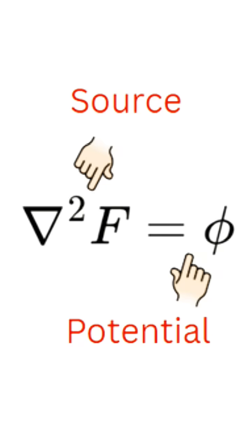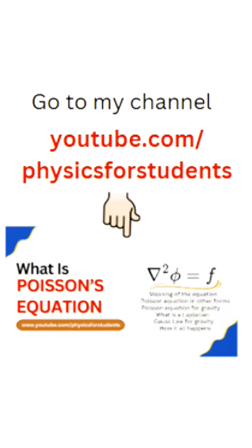On the right-hand side there is a phi sign, which is basically the potential. To know more about the Poisson equation, you can go to my channel 'Physics for Students' and find a detailed video on the Poisson equation.